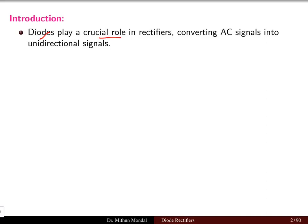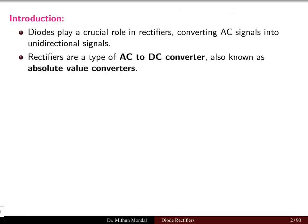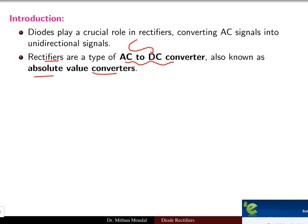Diodes play a very crucial role in rectifiers, converting the AC signal into a unidirectional signal. AC means alternating current which is changing with respect to time. This signal varying with time and magnitude can be converted to a unidirectional signal with the help of rectifiers, where diodes play a very important role. Rectifiers are a type of AC to DC converters, also known as absolute value converters.